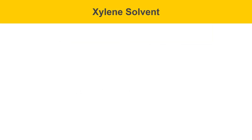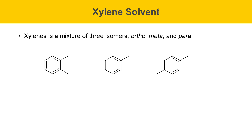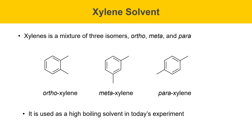Xylene is a mixture of three isomers — ortho, meta, and para — differing in the positions of the two methyl groups on the aromatic ring. It is used as a high-boiling solvent in today's experiment. The high temperature provides activation energy to induce the thermal cracking of the 3-sulfalene, and also provides activation energy for the Diels-Alder reaction.